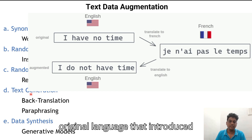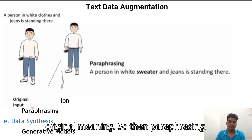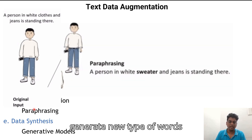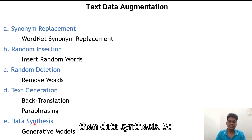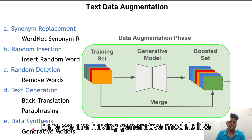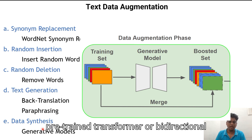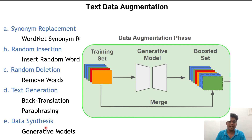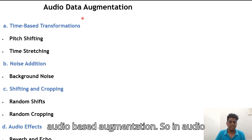Paraphrasing generates new variations of words from the original version. Data synthesis uses generative models like GPT — Generative Pre-trained Transformer — or BERT — Bidirectional Encoder Representations from Transformers — which can generate new text data.